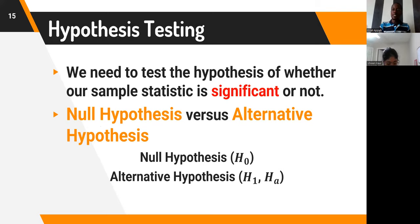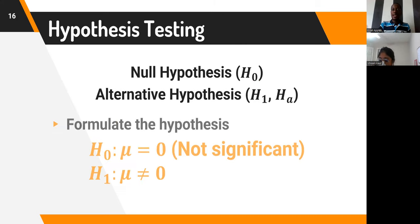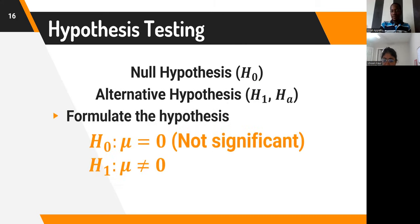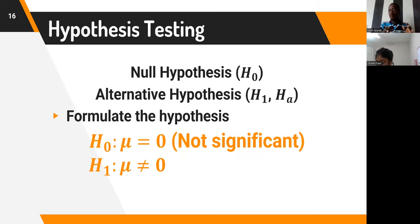We have the null hypothesis and the alternative hypothesis. The null hypothesis is represented with the notation H-naught (H₀), and the alternative hypothesis is H₁ or Hₐ. The null hypothesis, because it comes from the word null — meaning zero, nothing, no effect, no treatment, not significant — always takes that sort of negative description of the hypothesis you are testing.